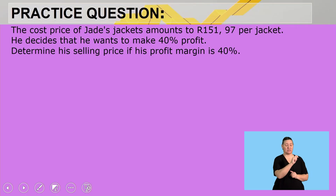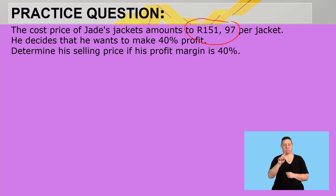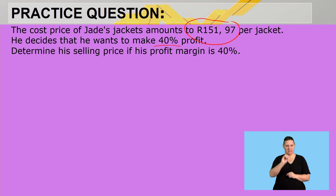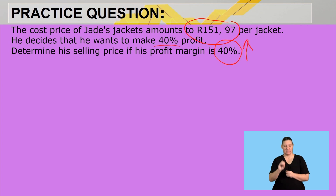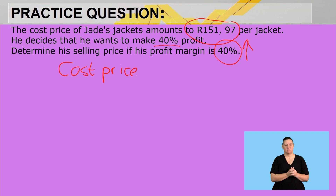The cost price of Jade's jacket amounts to R151.97 per jacket. He decides that he wants to make a profit of 40%. Determine the selling price of the jacket if his profit margin is 40%. Now we know the selling price needs to increase with that 40%. The cost price is 100%.